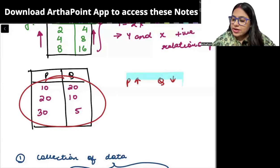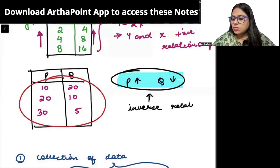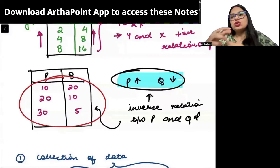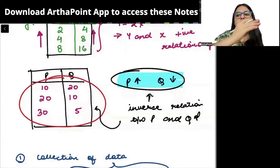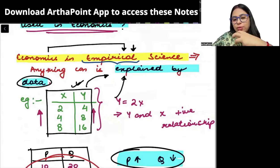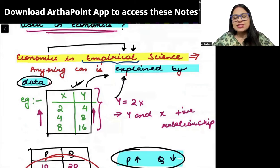I am able to interpret the law of demand. The law of demand that we study suggests there is an inverse relation between price and quantity demanded. We are able to understand that law of demand through this data. When we try to understand economics through data, it becomes empirical science.